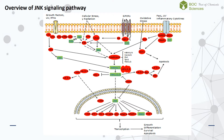Activation of SAPK/JNK requires the dual phosphorylation of Tyr and Thr residues located in a Thr-Pro-Tyr motif in the activation loop between subdomains 7 and 8 of the kinase domain. The phosphorylation is catalyzed by the dual specificity kinases MKK-4 and MKK-7, which are capable of catalyzing the phosphorylation of both Thr and Tyr residues.